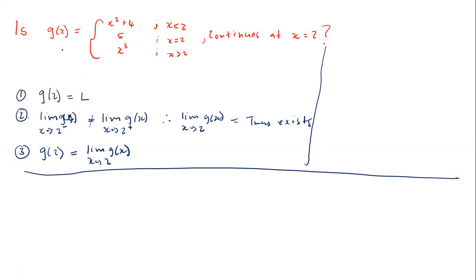Now let's answer the question. Condition 1: we determine g(2). When x = 2, g(x) = 5, so g(2) = 5. This is defined.